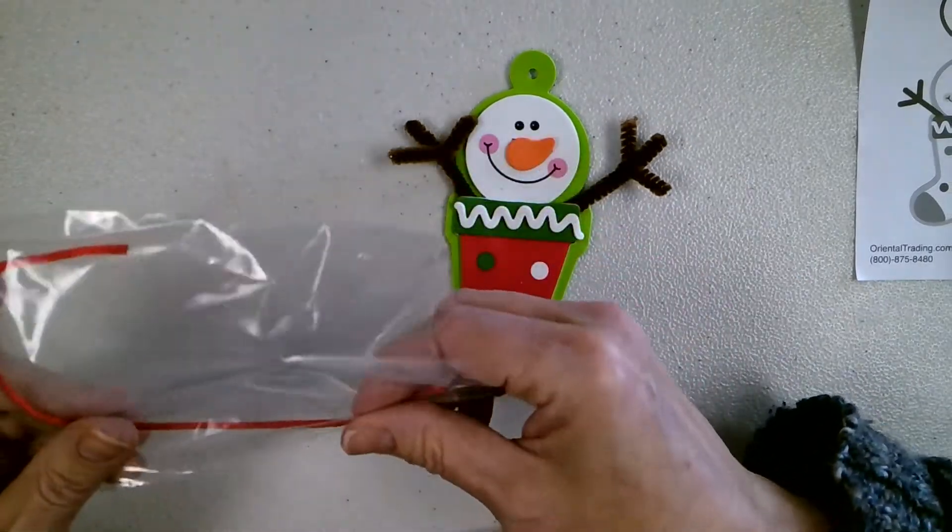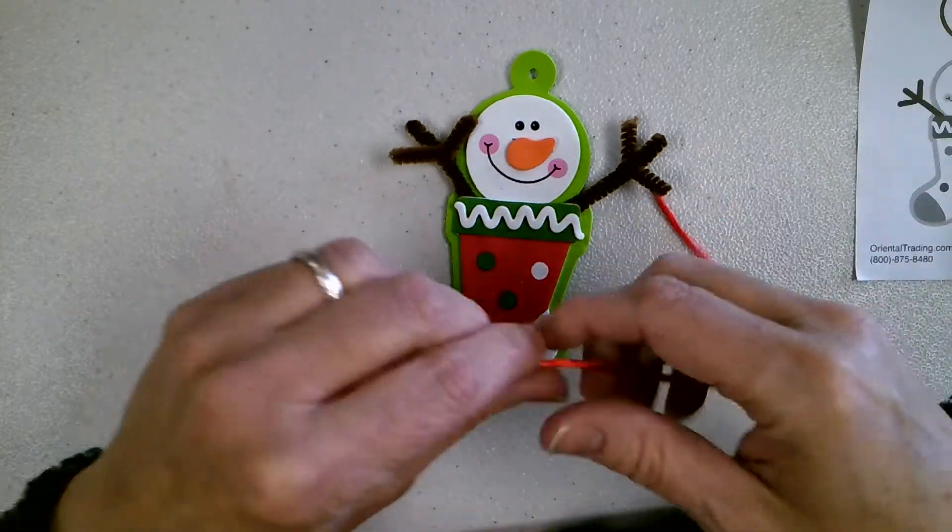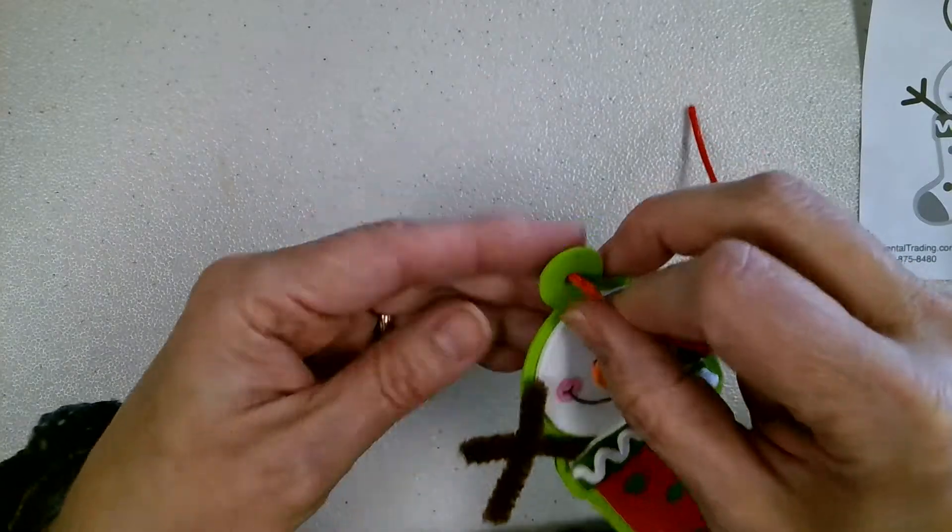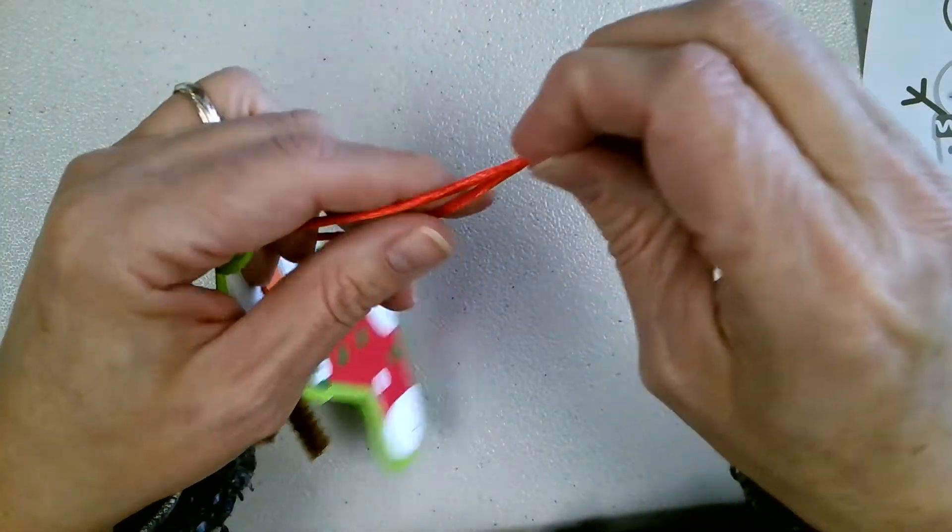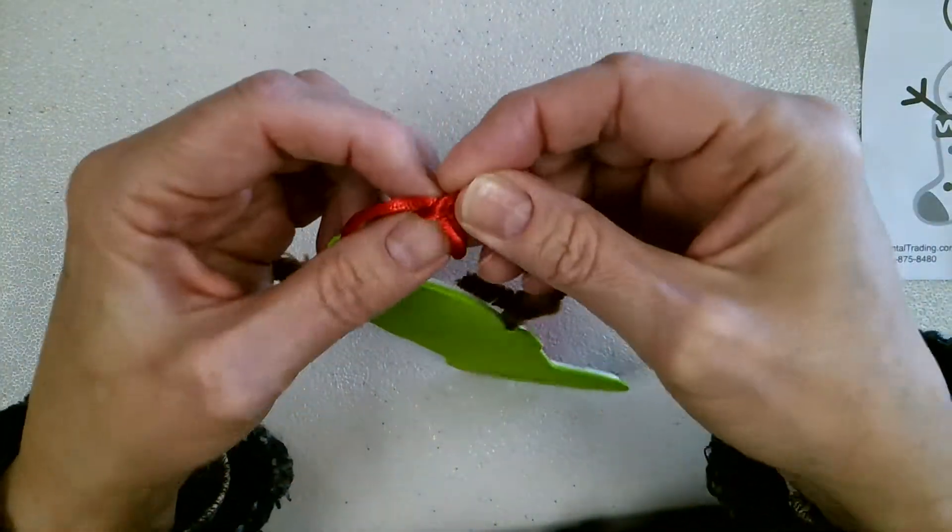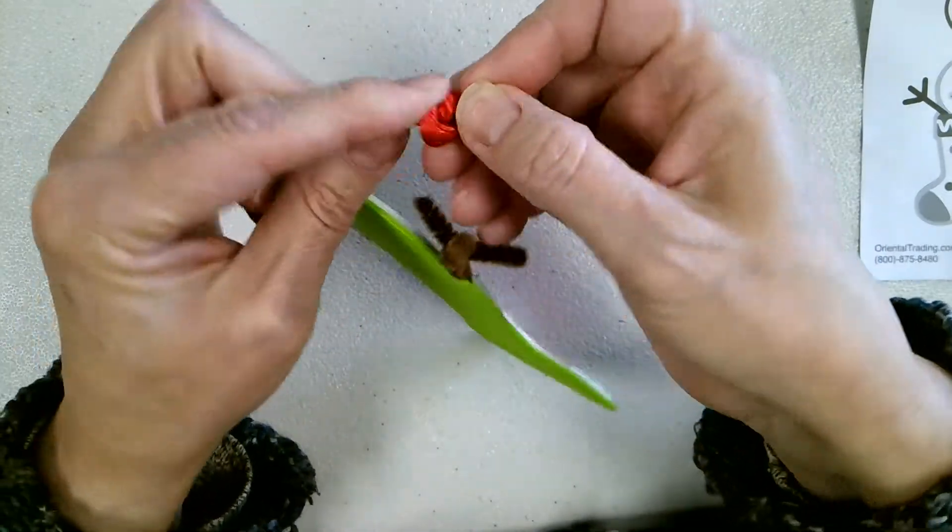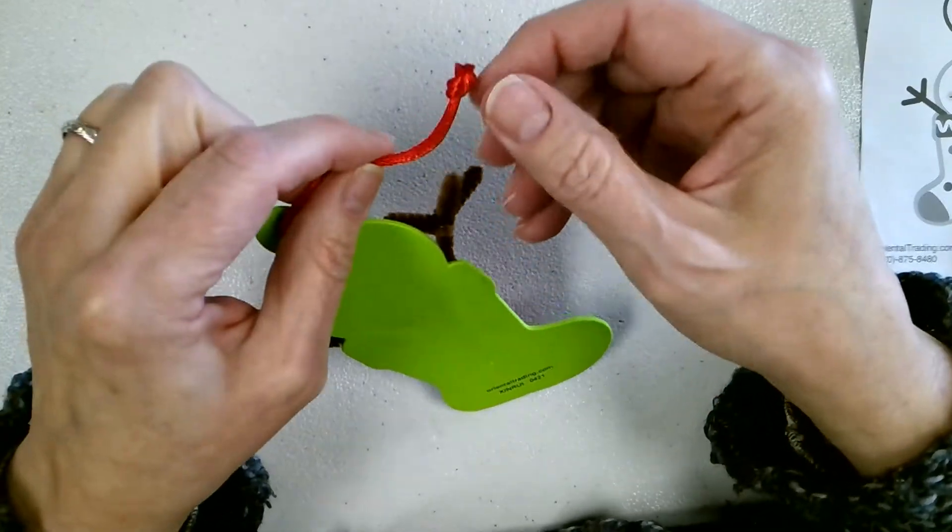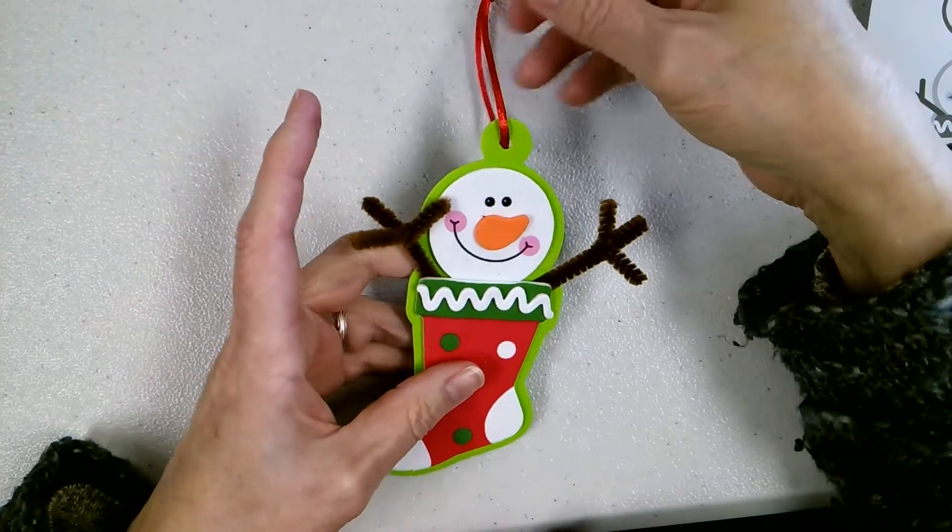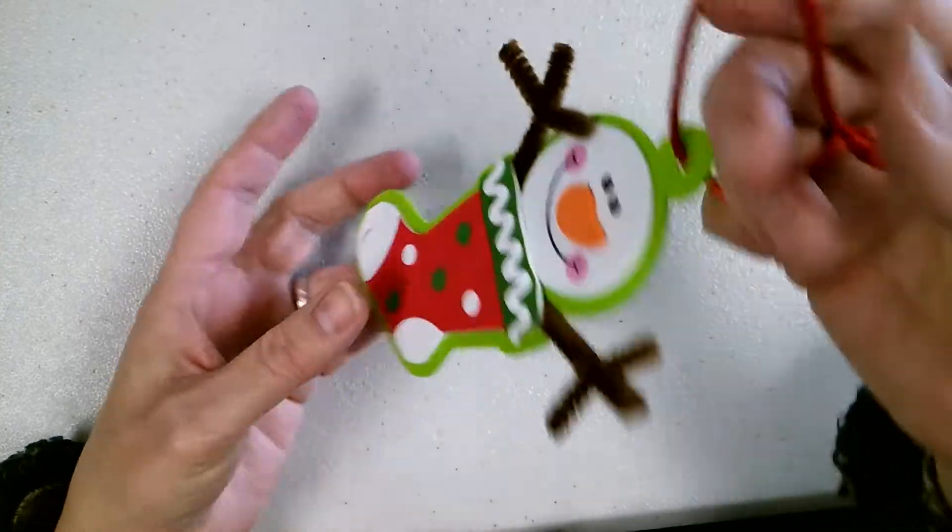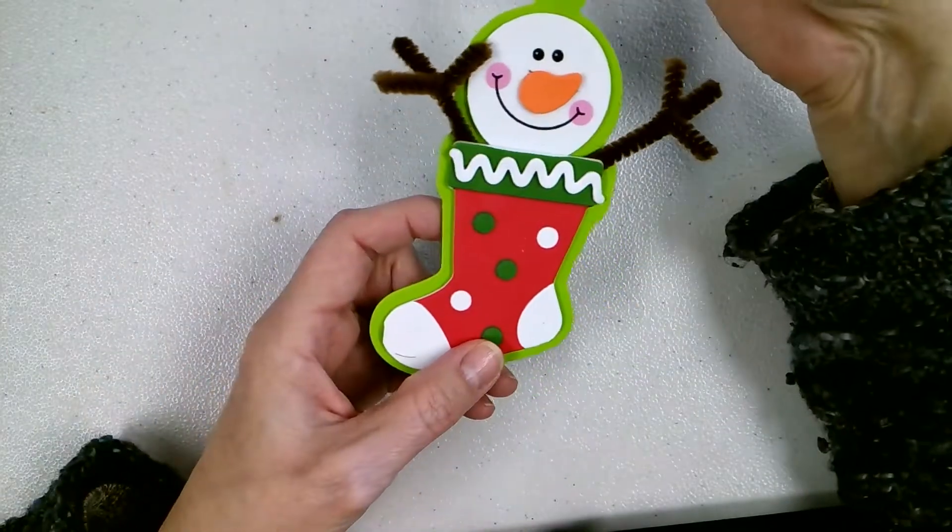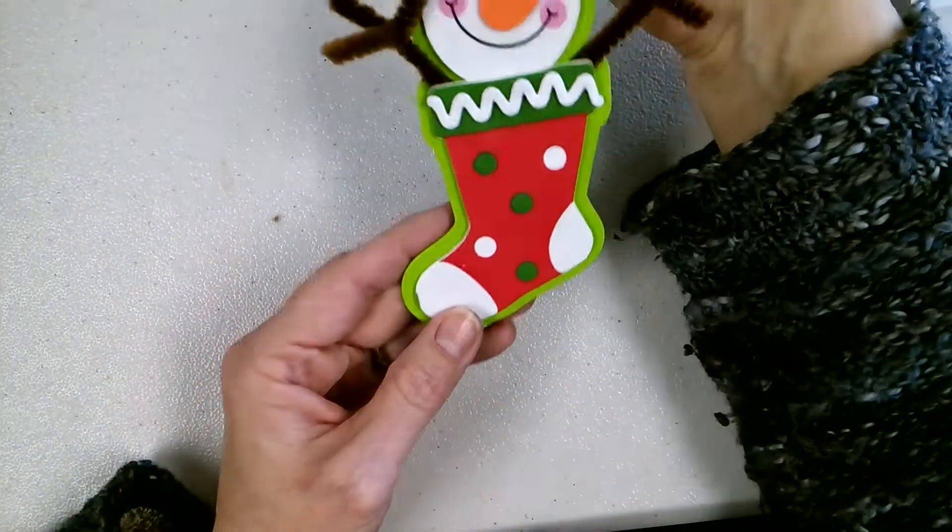And you take his little piece of string and you slide it right through. And then I usually do it like this, I tie him like that. And that is your ornament. Hang it where you like. You don't have a tree, you can hang it in a window, so that he is waving hello. All sorts of different things.